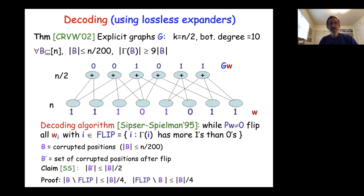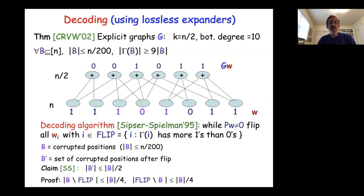Sipser and Spielman didn't have lossless expanders but had workarounds — Tanner's construction in 1981 already suggested putting small local codes rather than just parity at each vertex. With local codes having a little distance, normal expansion suffices — you don't need the lossless condition. The combinatorial and algebraic sides of coding theory now coexist, compete, and interact. The one thing achievable only using graph-based methods today is linear-time encoding and decoding, which gives Spielman's beautiful result — no other good code has this property.